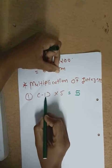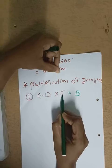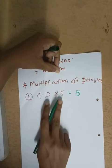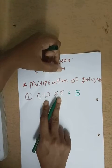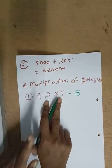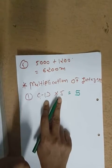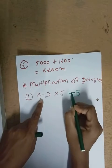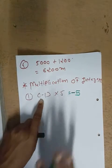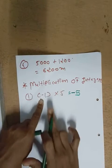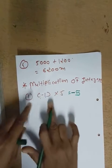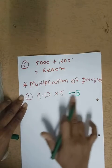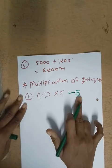So here, out of two numbers, one number is negative. So what will the answer be? Minus five. Again, minus one multiply by five — answer is minus five.